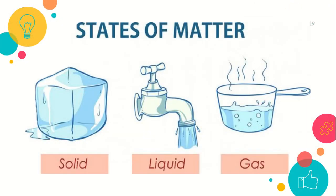Now we have here the states of matter. Matter can be classified as solid, liquid, and gas. The following are the properties of solid, liquid, and gas.